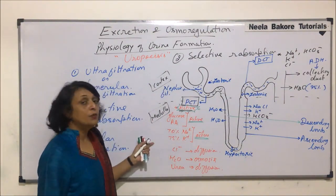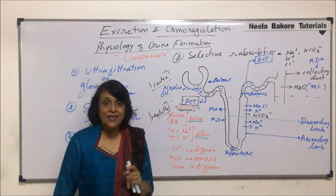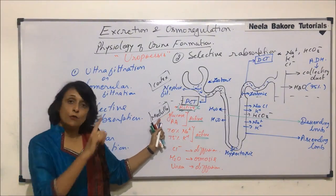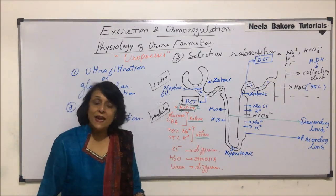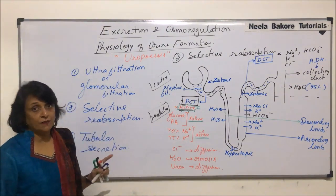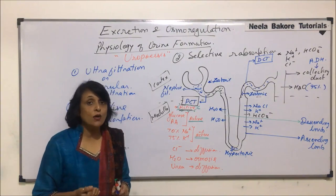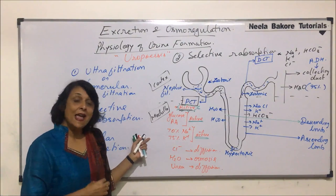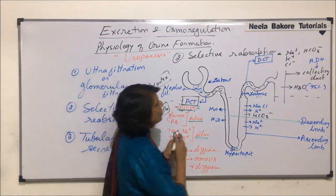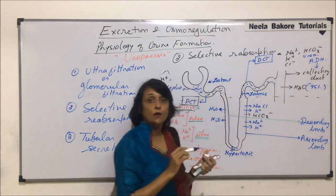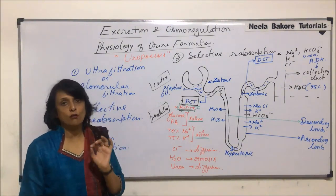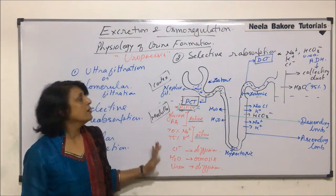This is tubular reabsorption. We call it reabsorption because glucose was already absorbed when we digest food — that was the first-time absorption. Here, that same glucose is getting absorbed again, and that is why we use the word reabsorption. It is selective: substances of high threshold or low threshold are selected and absorbed. Some urea also diffuses — it is a low threshold substance, absorbed in very small quantity by passive movement, not actively.